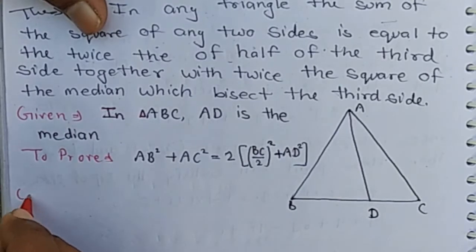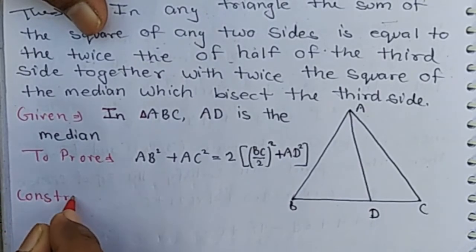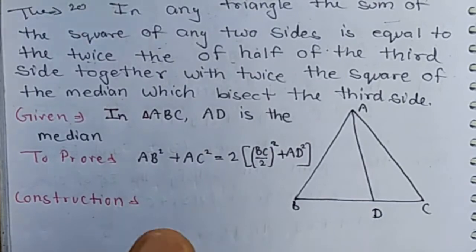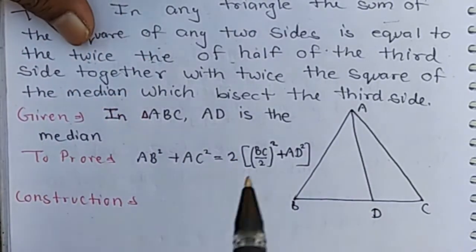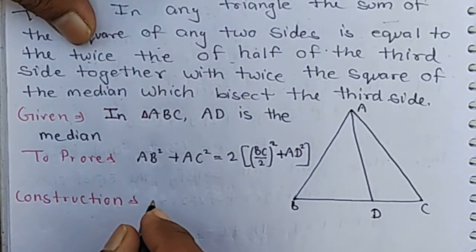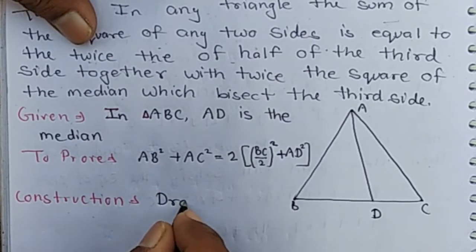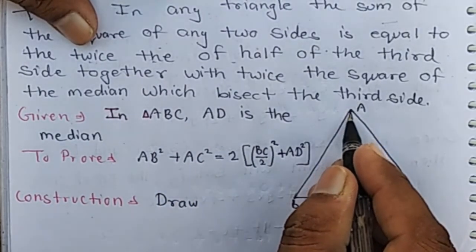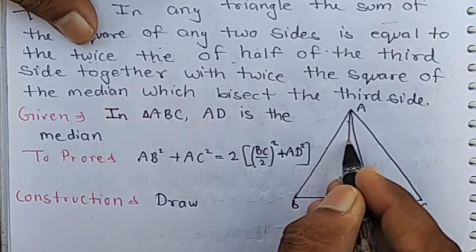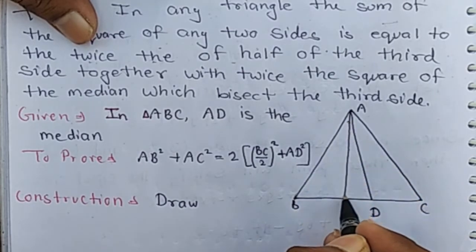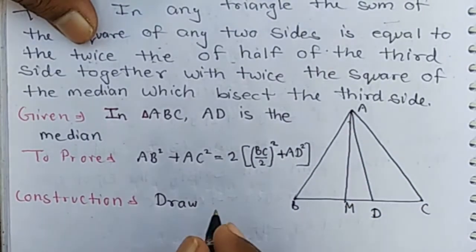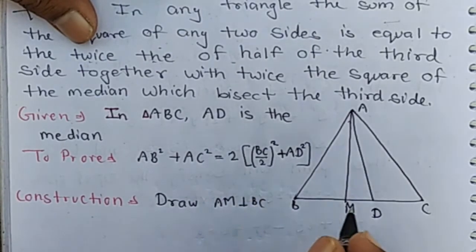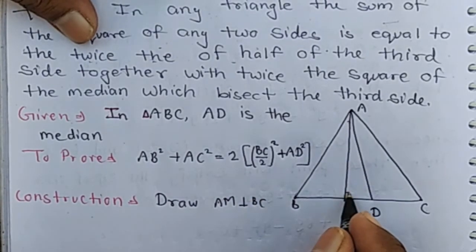Construction: Draw AM perpendicular to BC.